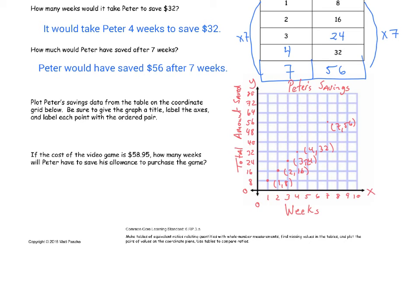The last question says, if the cost of the video game is $58.95, how many weeks will Peter have to save his allowance to purchase the game? So we don't have that information just yet, but I think that you can see the relationship between these equivalent ratios. This is a constant change. It's a straight line going straight up. Now we know after seven weeks, he has saved $56. He can't buy the video game just yet.